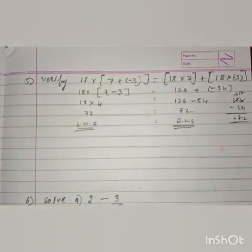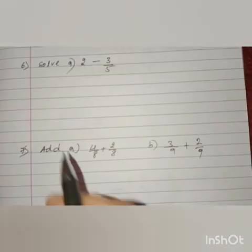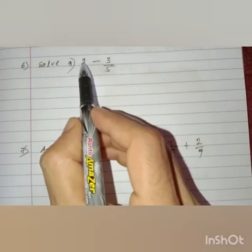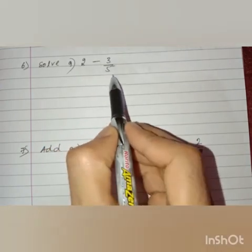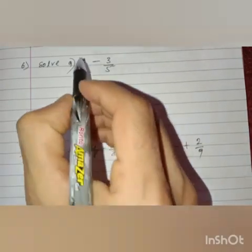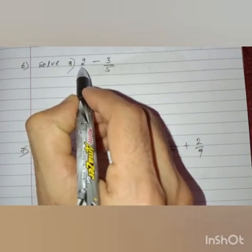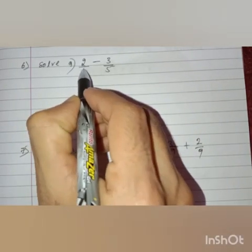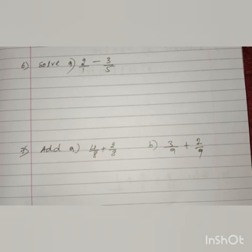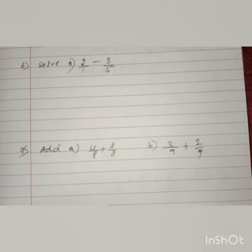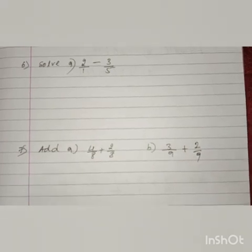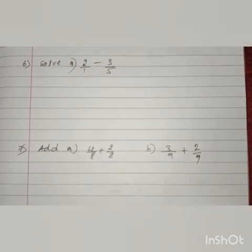The expression is verified. Got it, children? Next equation: solve 2 minus 3 by 5. Here we do not have a denominator, so let us put 1 as the denominator. If there is no denominator, we can put 1 as a denominator.